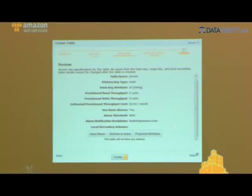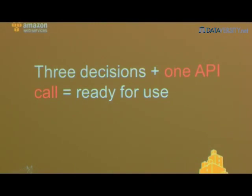You review your table and hit create — and you're ready to go. The table is created. You made the three decisions about provisioned capacity, keys, and optional local indices, and you can do it with the wizard in five clicks, or with an API call.